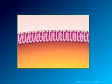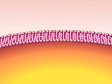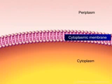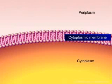In gram-negative bacteria, the gap between the cell membrane and the cell wall is known as the periplasmic space. Most gram-positive bacteria do not possess a periplasmic space but have only periplasm where metabolic digestion occurs and new cell peptidoglycan is attached.